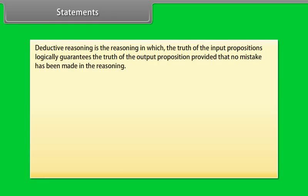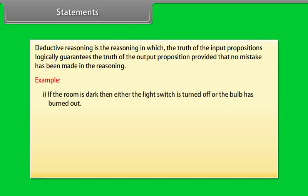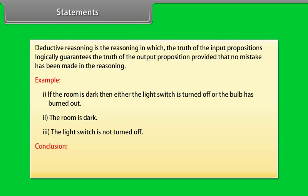Deductive reasoning is reasoning in which the truth of the input propositions logically guarantees the truth of the output proposition, provided no mistake has been made. For example, from: (1) if the room is dark, then either the light switch is off or the bulb has burned out; (2) the room is dark; (3) the light switch is not turned off — we conclude: the bulb has burned out.